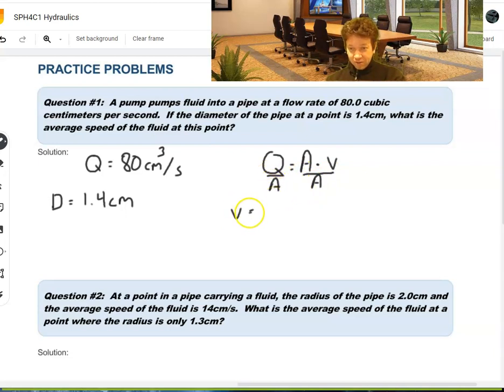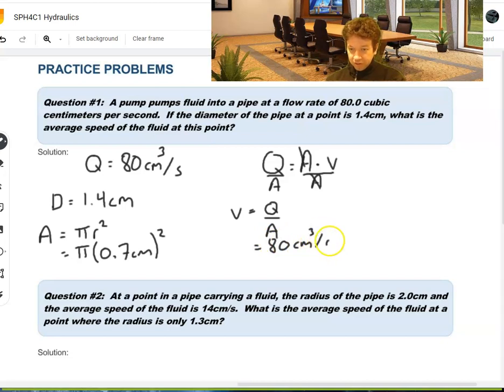We don't have area. We have diameter. But we can assume this pipe is perfectly circular, and the area would be pi r squared for a circle. Which, in our case, would be pi times r, which is half the diameter, so that would be 0.7 centimeters squared. So, we can put this into this equation. We know what Q is. Q is 80.